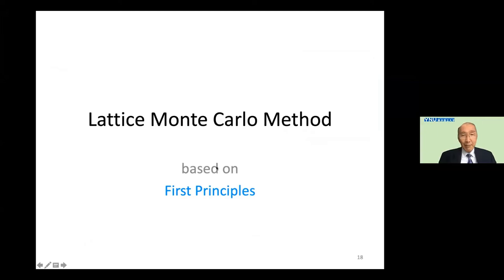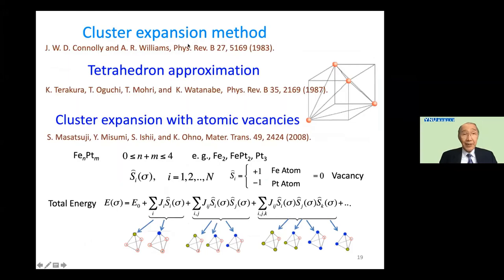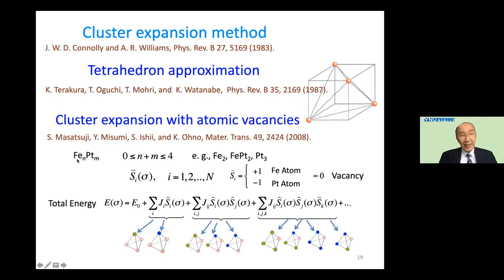I will show some examples of the lattice Monte Carlo method based on first principles. First, we use the cluster expansion method — Connolly-Williams' paper is very famous — using a tetrahedron approximation. Tetrahedron means four lattice sites including a unit cell. We use cluster expansion with atomic vacancies. The total energy is expanded in terms of spin variables: spin +1 means an iron atom, spin -1 means a platinum atom, and spin 0 means a vacancy.